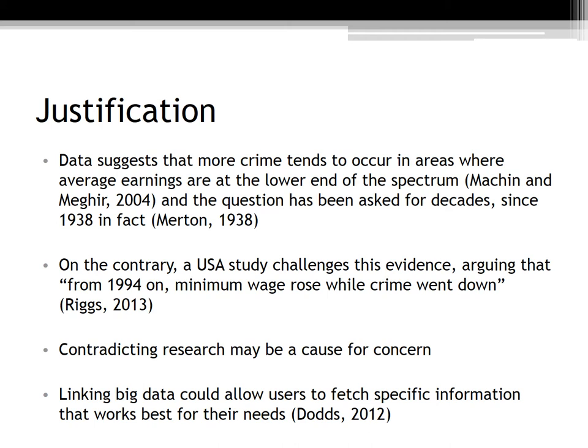Stephen Machin and Costas Meghir concluded in their 2004 study, Crime and Economic Incentives, that crime rates should be higher when and where wages at the bottom end of the wage distribution are lower, reflecting poorer market opportunities, where the probability of being caught is lower, where crime rates are already higher, and where crime and the potential returns to crime are high.